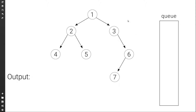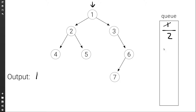Let's see this with this simple tree. We first push to the queue the root of the tree, one, and because we know that this is the only node at the first level, we push the delimiter to the queue. Now we begin by setting the current node to the front of the queue, so one. We pop the front of the queue, we print one, and then we add the left child to the queue, followed by the right child.